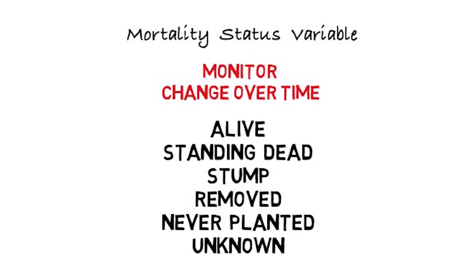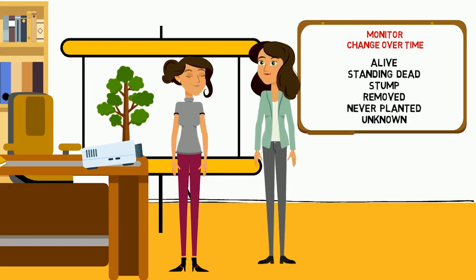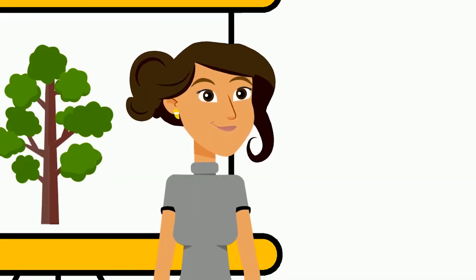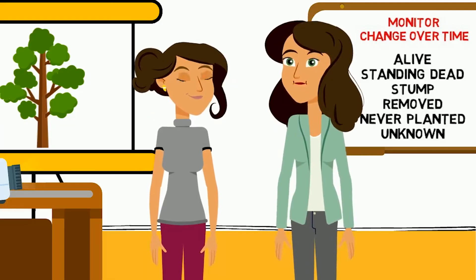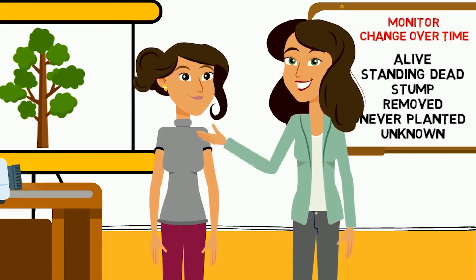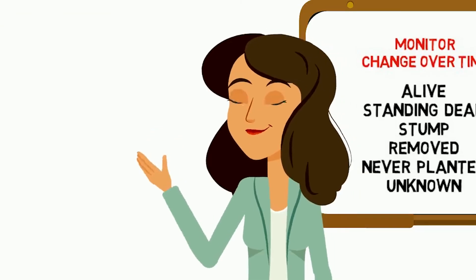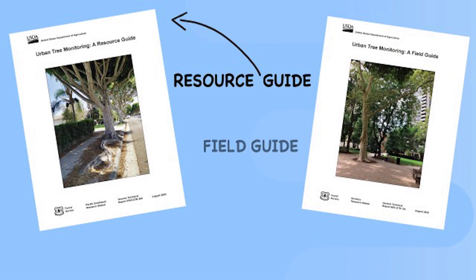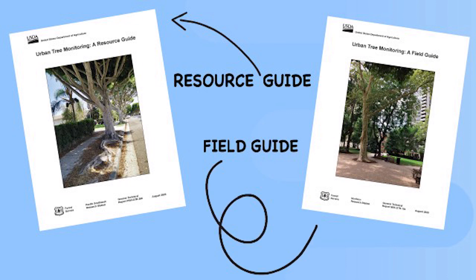Let's recap. In this short video we touched upon only one element of urban tree monitoring: recording mortality status. But there's so much more to learn if you want to run your own monitoring project. For more tips, check out the links below — and thanks for watching.